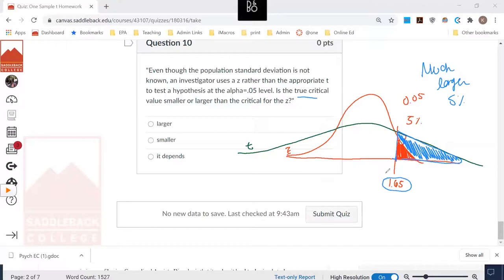But if you were supposed to use the t, then your critical value was actually going to be up here because this is where the true 5% in the upper tail of the distribution would be.